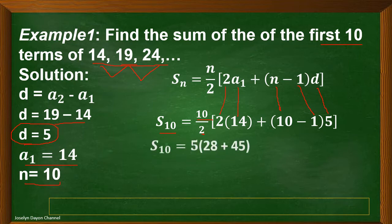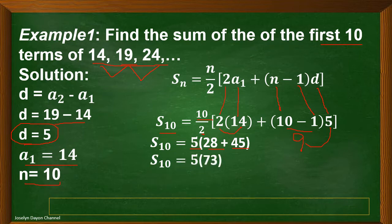Simplify. 10 divided by 2 equals 5. 2 times 14 equals 28. 10 minus 1 equals 9. And 9 times 5 equals 45. Simplify further: copy 5, then add 28 and 45 to get 73. Then multiply: 5 times 73, the answer is 365.